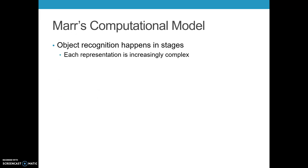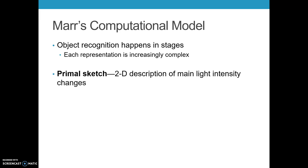Mar's computational model is basically the idea that object recognition happens in a series of stages, and each representation becomes increasingly complex. The first stage is called a primal sketch — a two-dimensional description of just light intensity changes. This is when we start looking at low-level features: we look for edges, contours, and blobs.